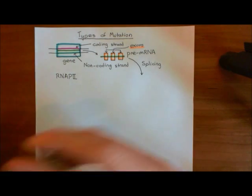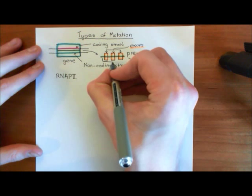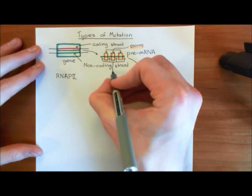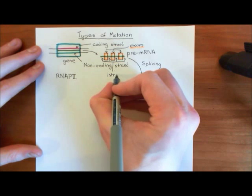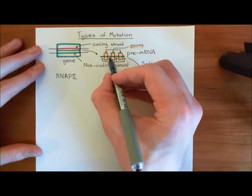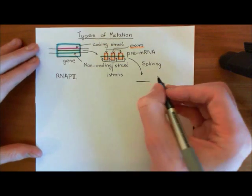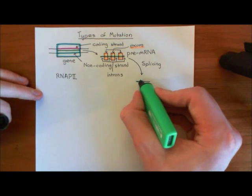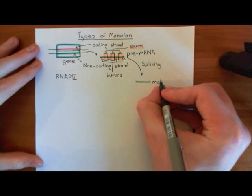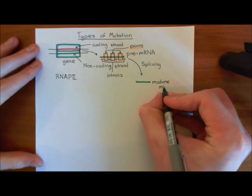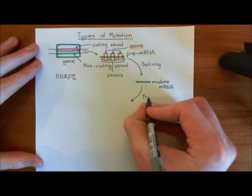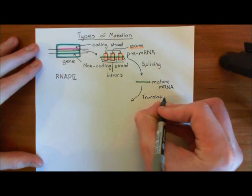The portions in between the exons that are not supposed to be translated are known as the introns — these are not supposed to be translated. In the process of splicing, you cut the introns out and then re-join the exons to make a shorter piece of mRNA that just consists of the exons joined together. This shorter piece of mRNA consisting only of exons is the mature mRNA, and this can now go through a ribosome and be translated into a protein.